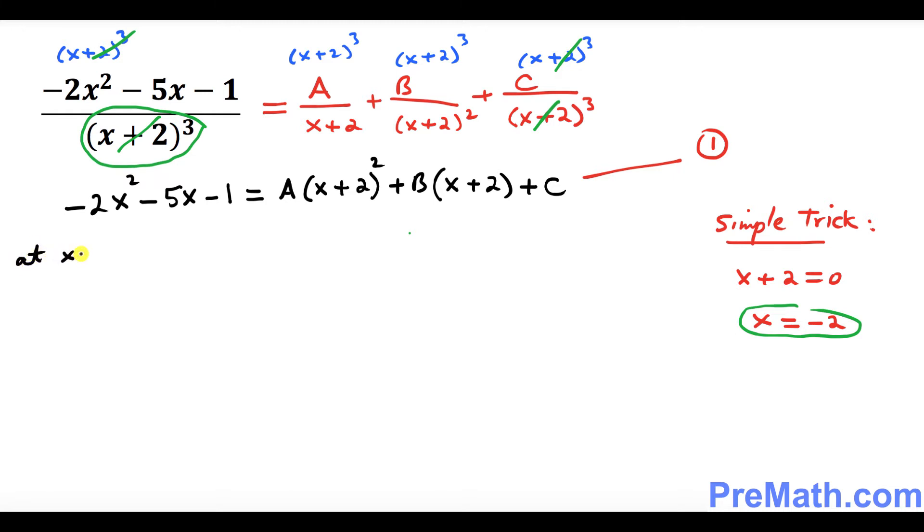I'm going to say at x equal to negative 2, what's going to happen? Let's go ahead and plug it in in this equation number one. So negative 2 times negative 2 squared minus 5 times negative 2 minus 1 equals to, do you see this thing over here, A times negative 2 plus 2 is going to give you 0, 0 squared is 0 of course, plus B times negative 2 plus 2 is again 0, plus C.